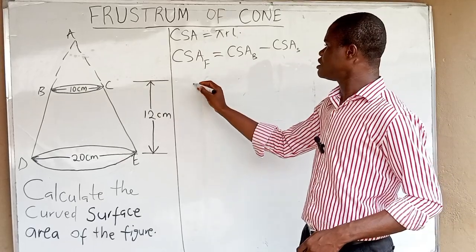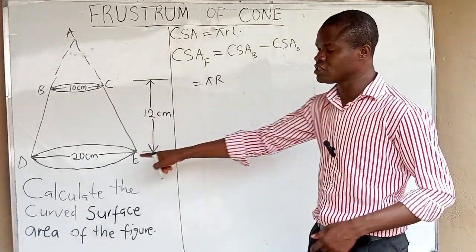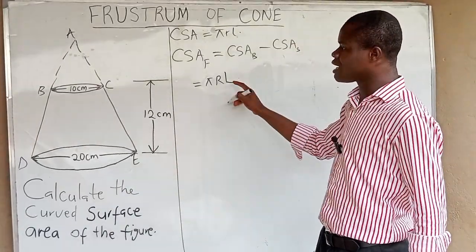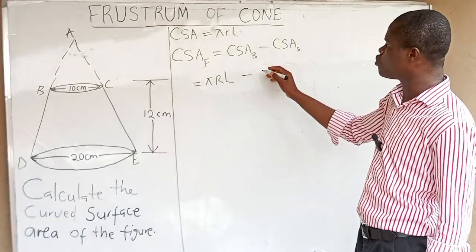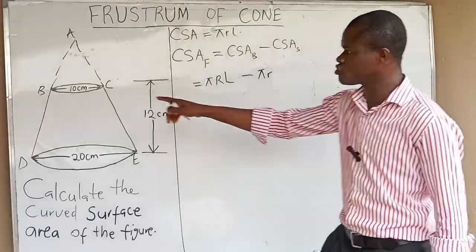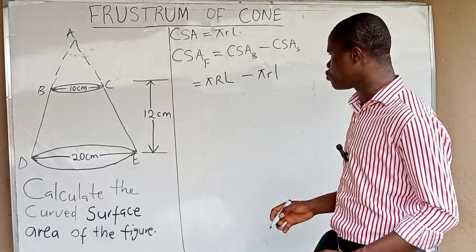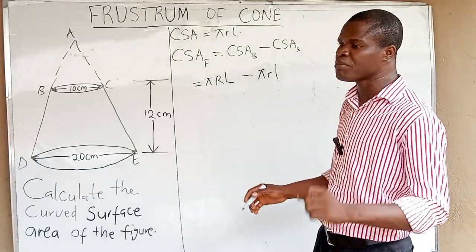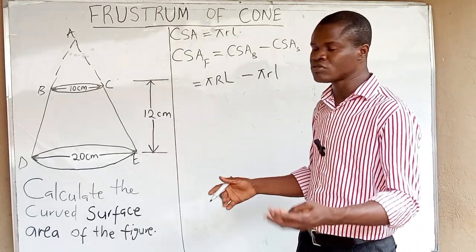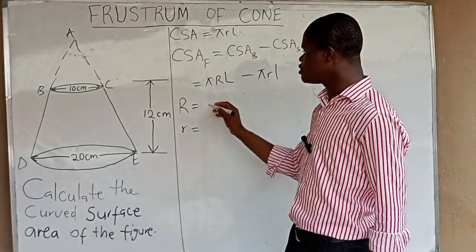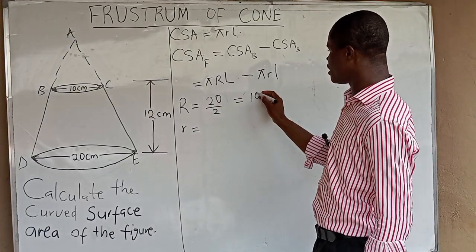This expands to: π times big radius times capital L, minus π times small radius times small L. Since we are given the diameters, the radius of the bigger cone is 20 divided by 2, which gives us 10 centimeters. The radius of the smaller cone is 10 divided by 2, which gives us 5 centimeters.